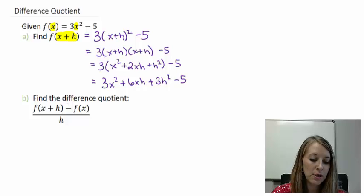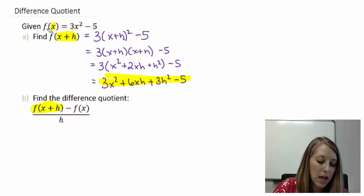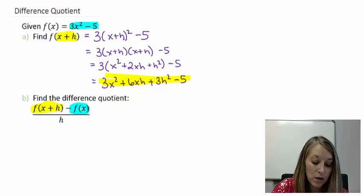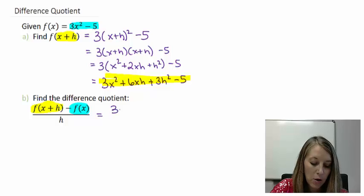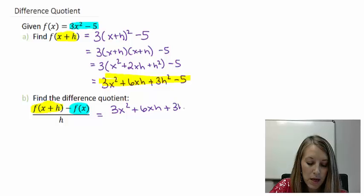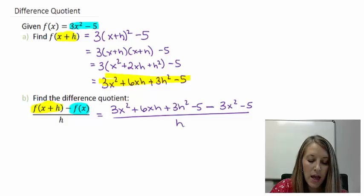Okay, so all I need to do is substitute these in. So I'm going to take this f of x plus h and substitute it in for this function here. I'm going to take my original function, 3x squared minus 5, and substitute it in for f of x, because that is my original function. And then I'm going to divide it by h. So my yellow piece, 3x squared plus 6xh plus 3h squared minus 5, and I'm subtracting my blue piece, which is 3x squared minus 5. And that is all over h.